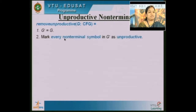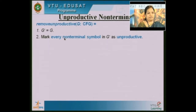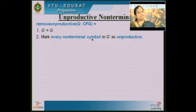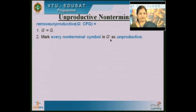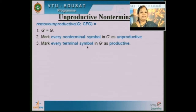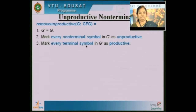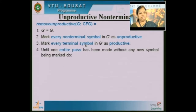We will see both algorithms one by one in sequence. First is unproductive non-terminals. Given a grammar, first mark every non-terminal symbol as unproductive — so initially all non-terminal symbols present in the grammar are set as unproductive. Then mark all terminal symbols as productive.